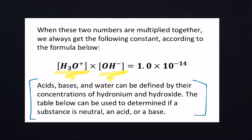Acids and bases in water can be defined by the concentrations of hydronium and hydroxide ions. The table in your notebook can be used to determine if a substance is neutral, an acid, or a base. Let's take a look at that table now.